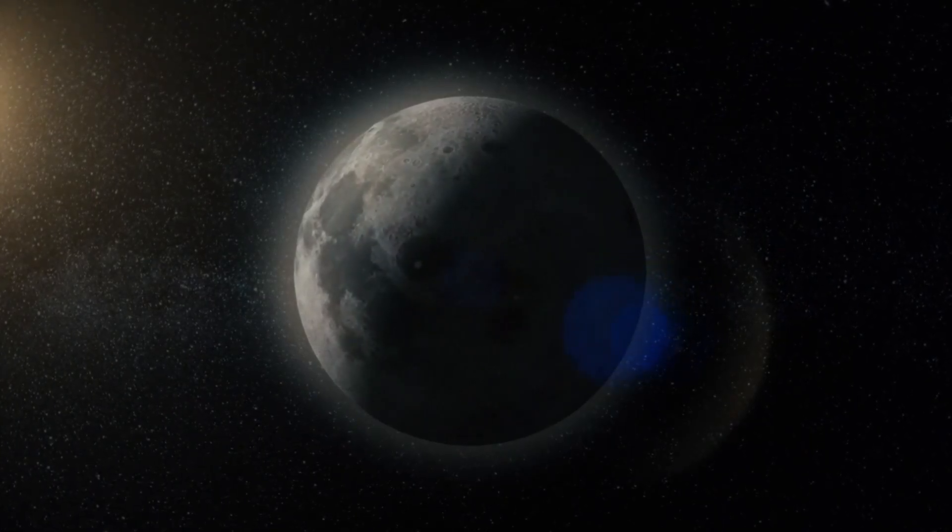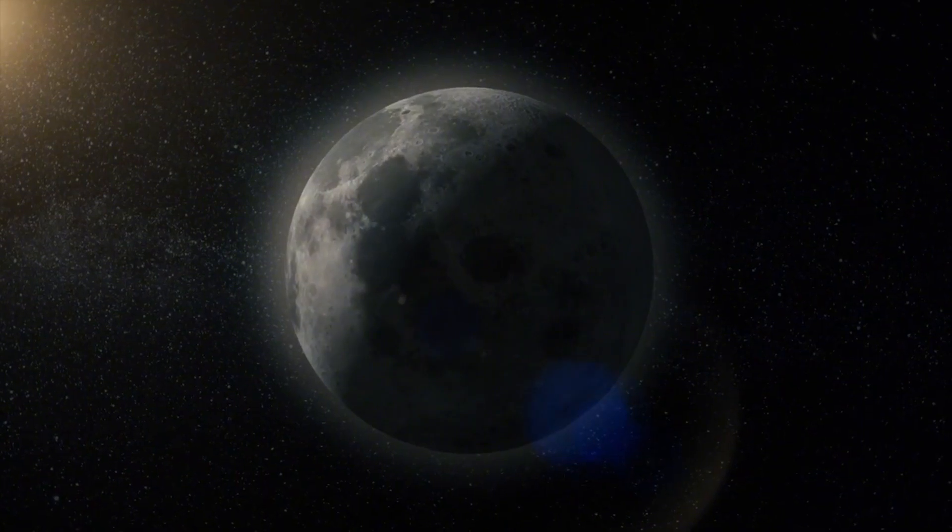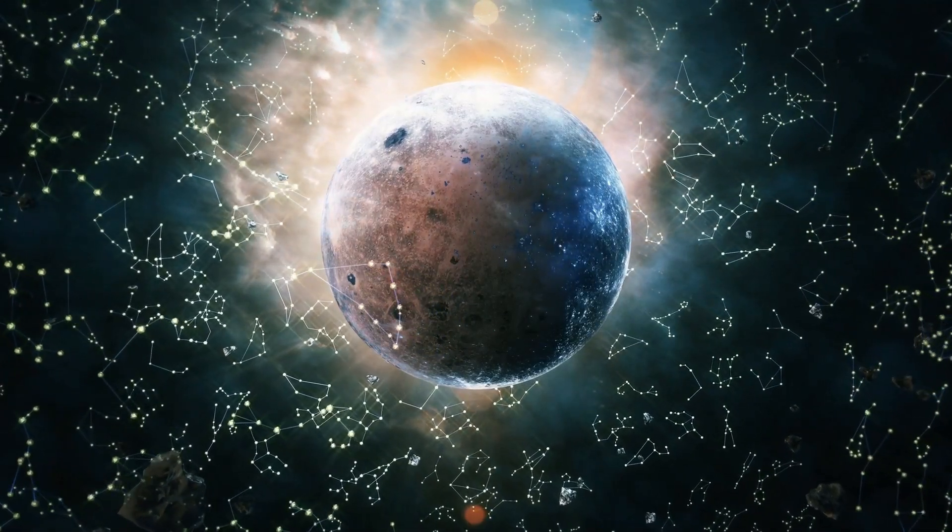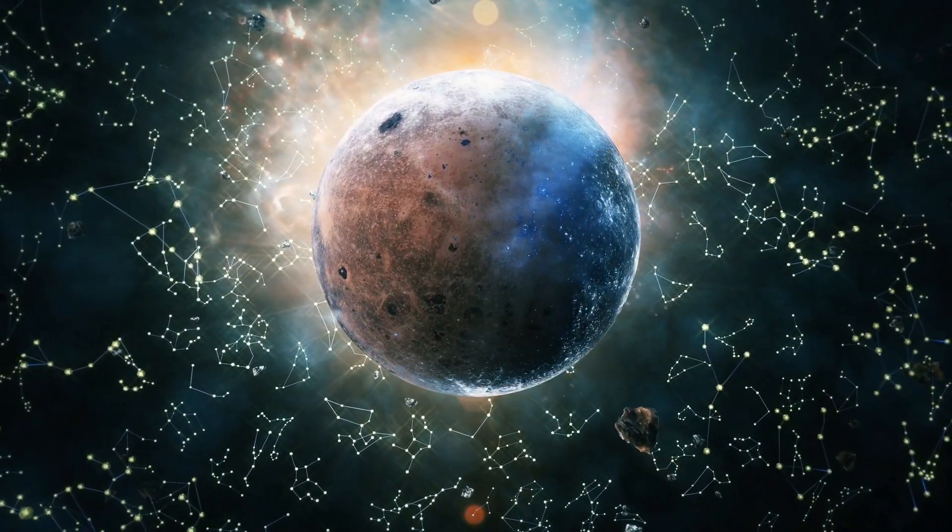But wait, there's more. Proxima b isn't alone in its orbit around the red dwarf star. It has a solitary companion, Proxima Centauri c, which might reveal even more secrets the star system holds. Maybe there's another friend that we haven't found yet.